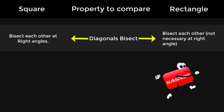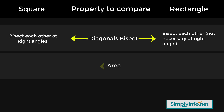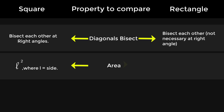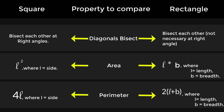Diagonals of a rectangle bisect each other, but not necessarily at right angles. Area of a square: l squared, where l is equal to side. Area of a rectangle: l times b, where l is length and b is breadth. Perimeter of a square: 4l, where l is the side. Perimeter of a rectangle: 2 into (l plus b), where l is length and b is breadth. Thank you.